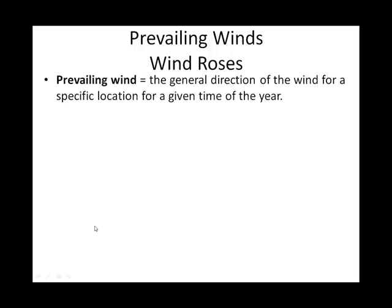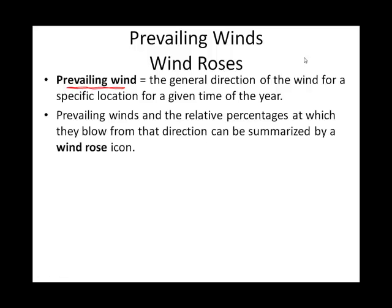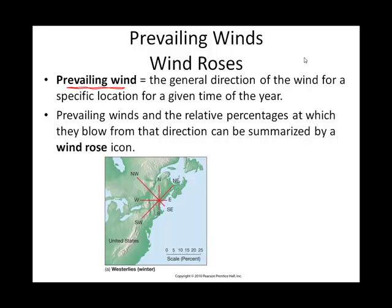These are kind of neat. When we talk about global winds, we'll see that given a location and a general time of year, we generally know the direction that the wind is going to blow. So we can come up with these sort of gizmos called a wind rose.